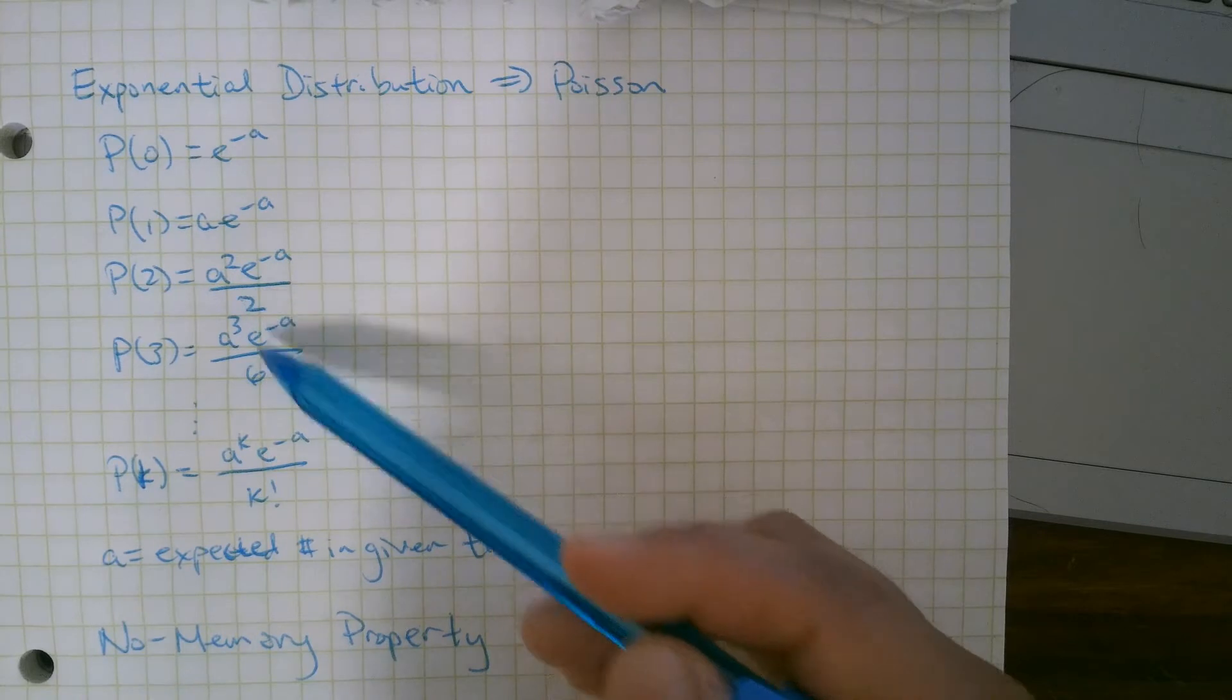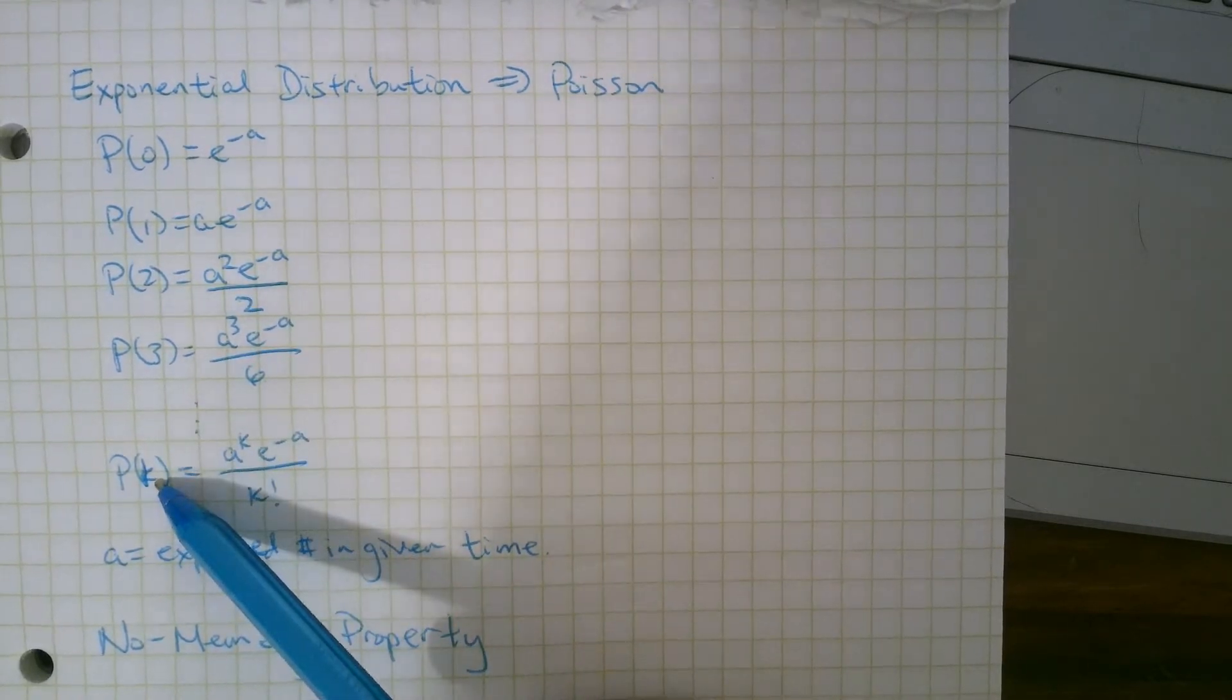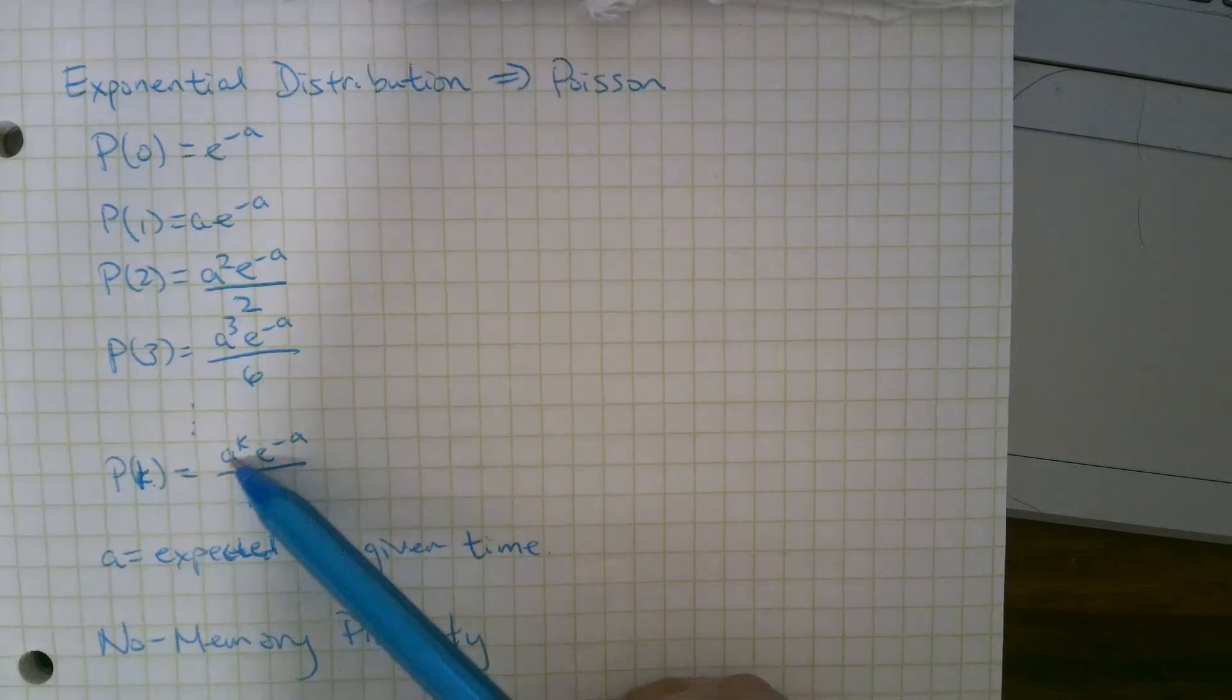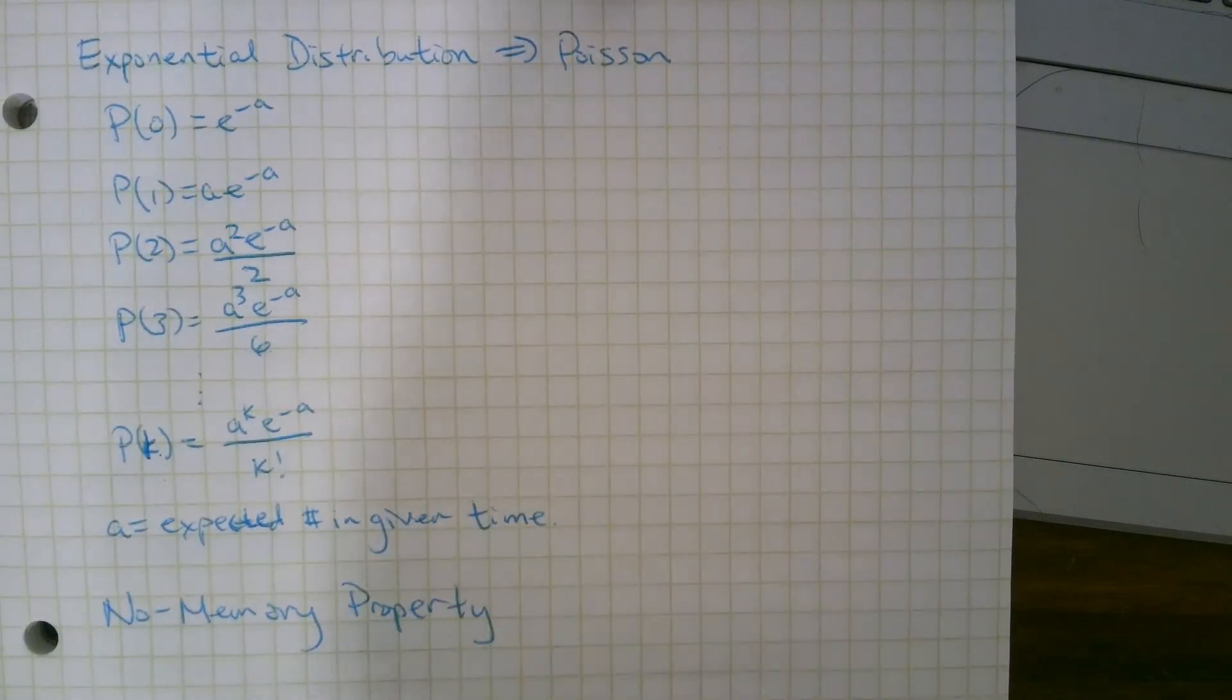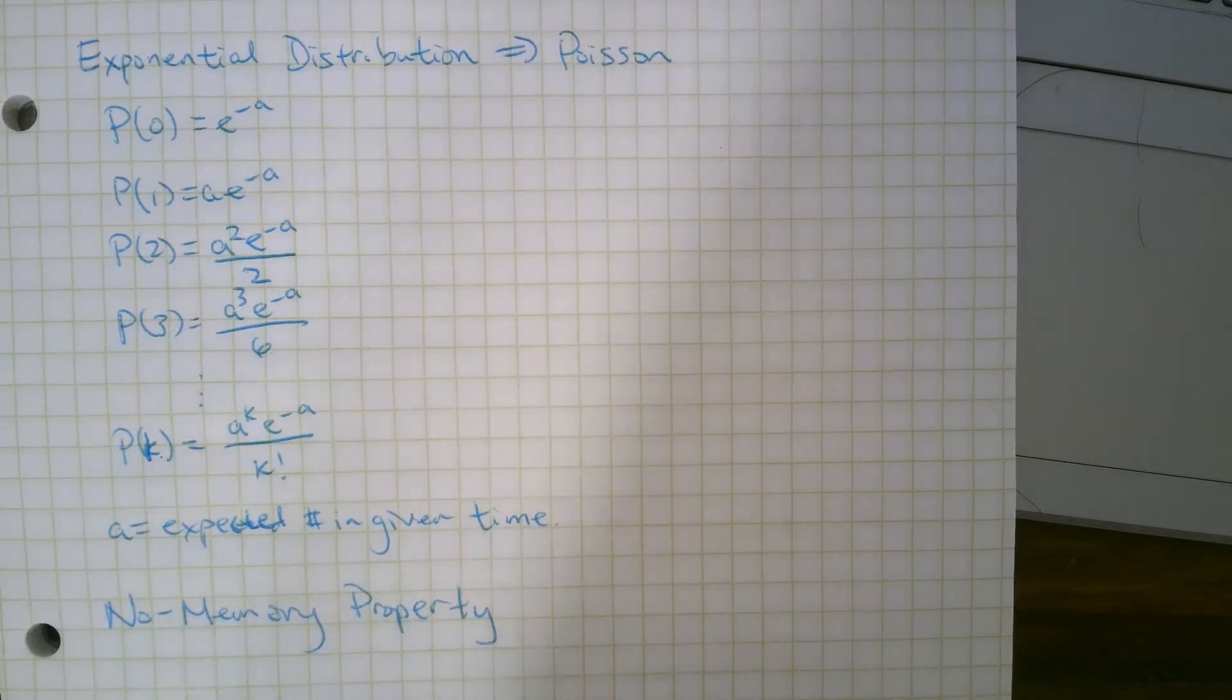And we notice these numbers are factorials, and here's the general formula. Probability of k customers in a given length of time is a to the k times e to the negative a over k factorial, where a is the expected number of customers, or the average number in that time.